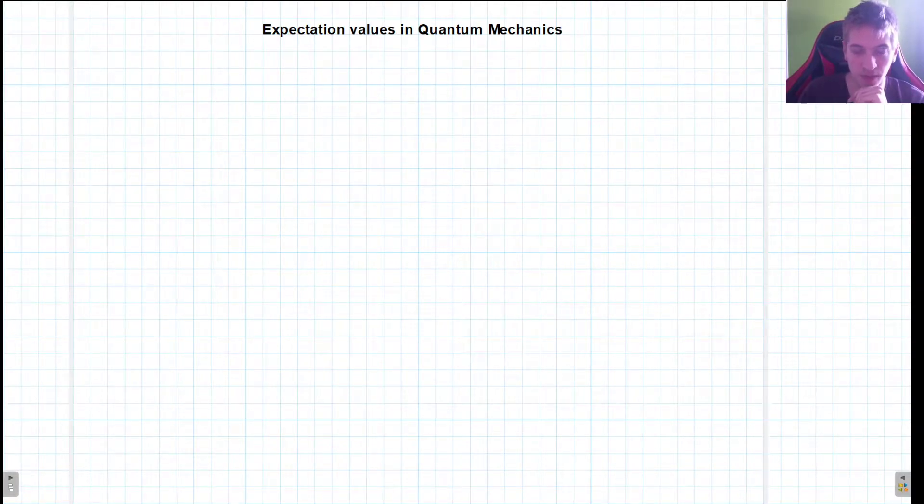So the last few times we discussed the Schrödinger equation, its interpretation, and the normalization of wave functions. Now we can finally begin to talk about some of the more useful things, basically how to actually use this wave function once we know it.